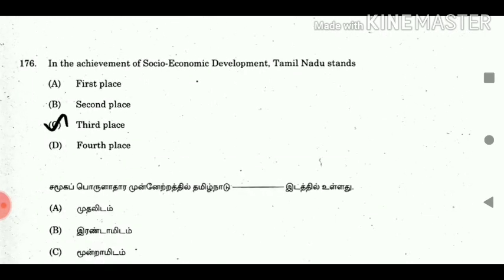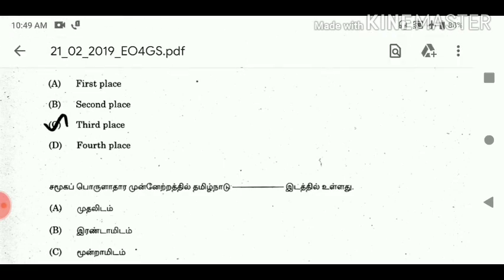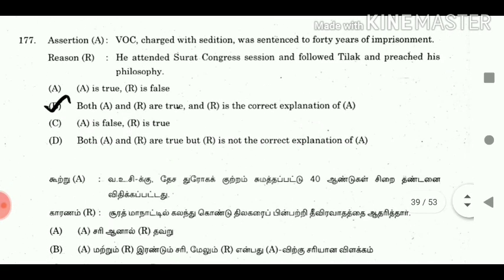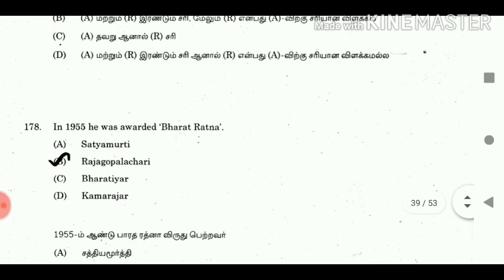Question 176: In the achievement of socio-economic development, Tamil Nadu stands at? Answer: Third place. Question 177: Assertion: Bal Gangadhar Tilak, charged with sedition, was sentenced to 6 years of imprisonment. Reason: He attended the Surat Congress session and followed and preached Tilak's philosophy. Answer: Both A and R are true and R is the correct explanation of A. Question 178: In 1955, who was awarded Bharat Ratna? Answer: Rajaji (C. Rajagopalachari).